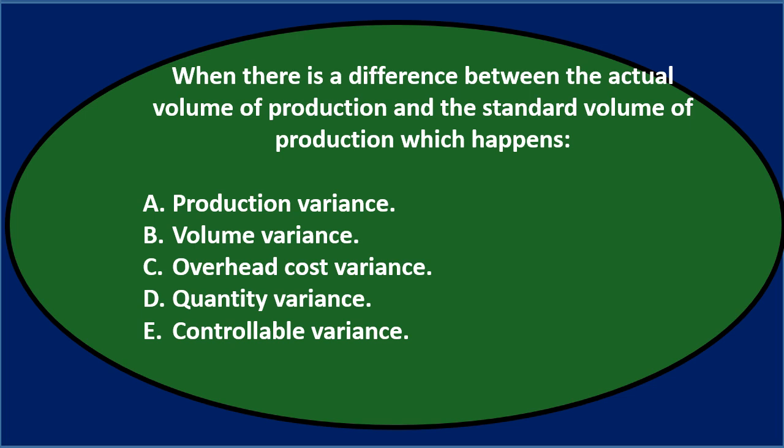First question: When there is a difference between the actual volume of production and the standard volume of production, which happens? A. Production variance. B. Volume variance. C. Overhead cost variance. D. Quantity variance. Or E. Controllable variance.